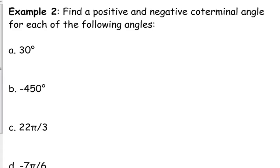We're going to do the same thing again — find one positive and one negative for each of the following angles. We're also going to identify whether it's between 0 and 360 degrees or 0 and 2 pi, depending on whether we're in degrees or radians. So 30 degrees itself is between 0 and 360 degrees, so the co-terminal angles are going to be outside of that range. For a positive, we add 360, so our positive would be 390 degrees, and our negative would be negative 330.